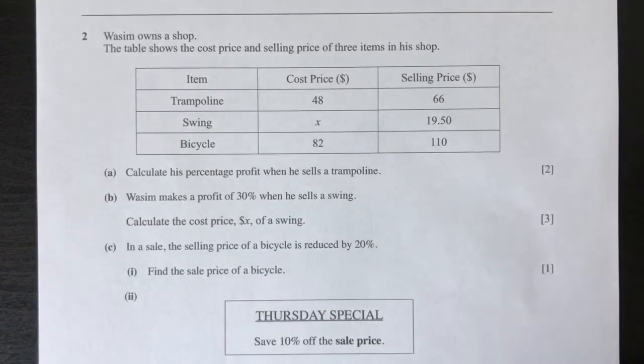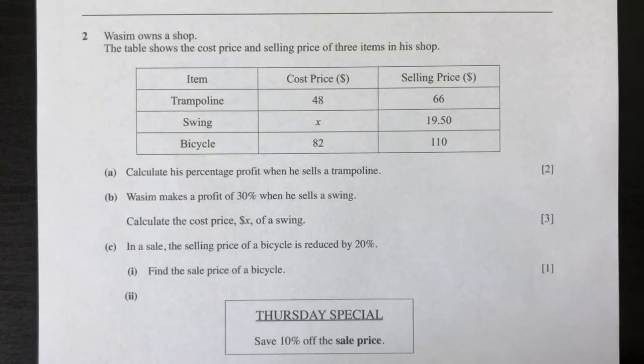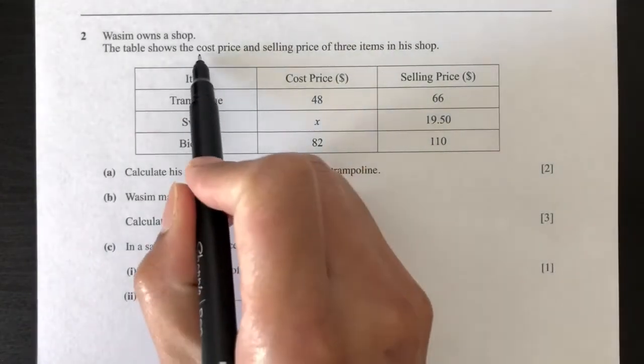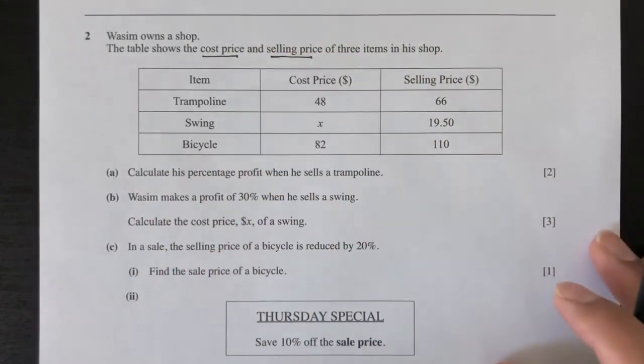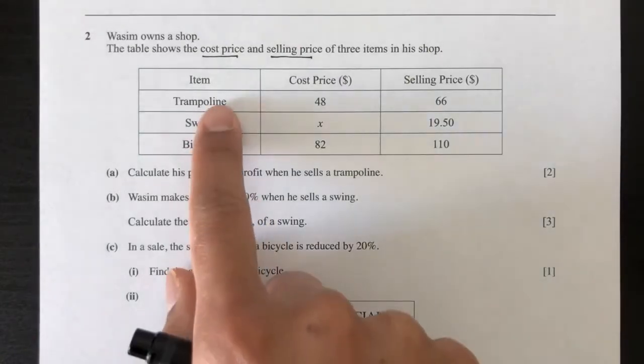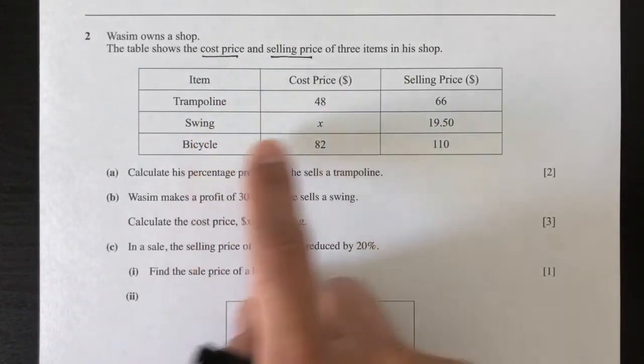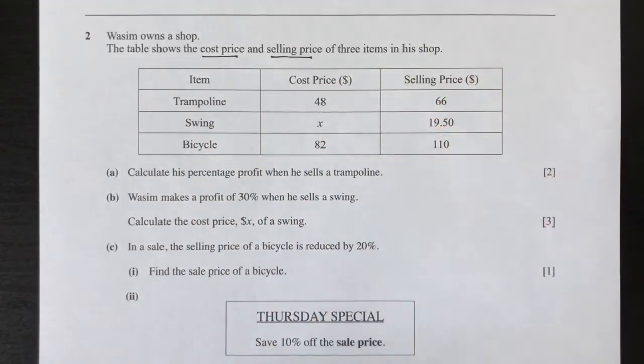Hello guys, welcome to this new video. This is a requested question, question number two from paper May/June 2010, and it's a percentage question. Let's see what happens in this question. Vasin owns a shop. The table shows the cost price and selling price of three items in his shop: trampoline, swing, and bicycle.